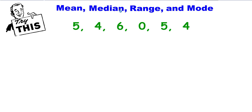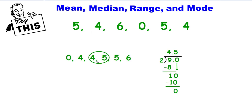To find the median of a set of numbers, you put them in order from least to greatest. Find the numbers that are in the middle — in this case there are 2. So you add those two together, you get 9, and you divide by 2. The median of this set of numbers is 4.5. Think of a number line: if you have 4 and 5, the middle is 4.5.